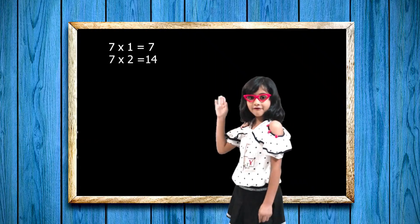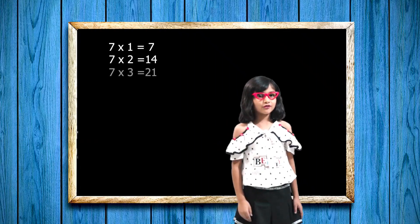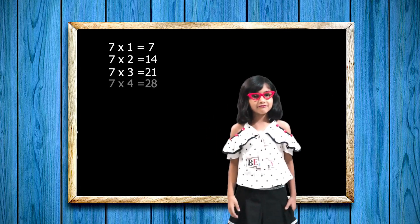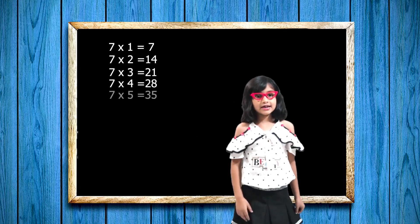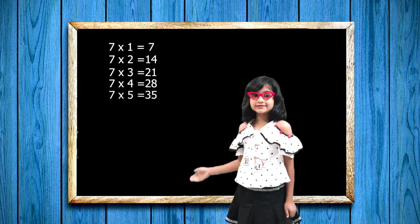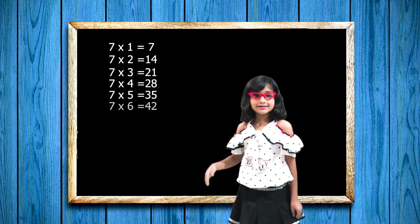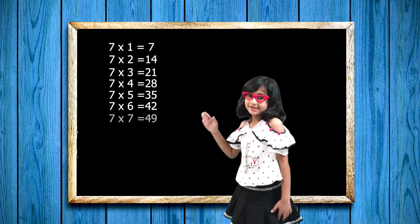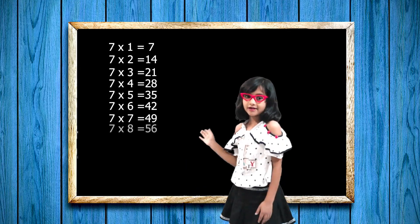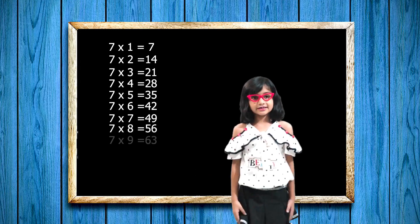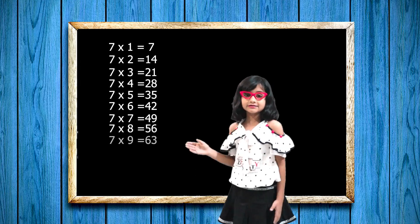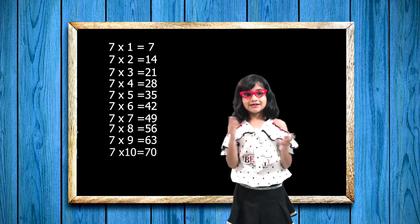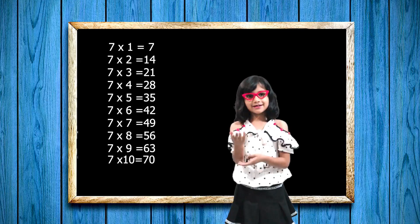Seven one's a seven, seven two's a fourteen, seven three's a twenty-one, seven four's a twenty-eight, seven five's a thirty-five, seven six's a forty-two, seven seven's a forty-nine, seven eight's a fifty-six, seven nine's a sixty-three, seven ten's a seventy.